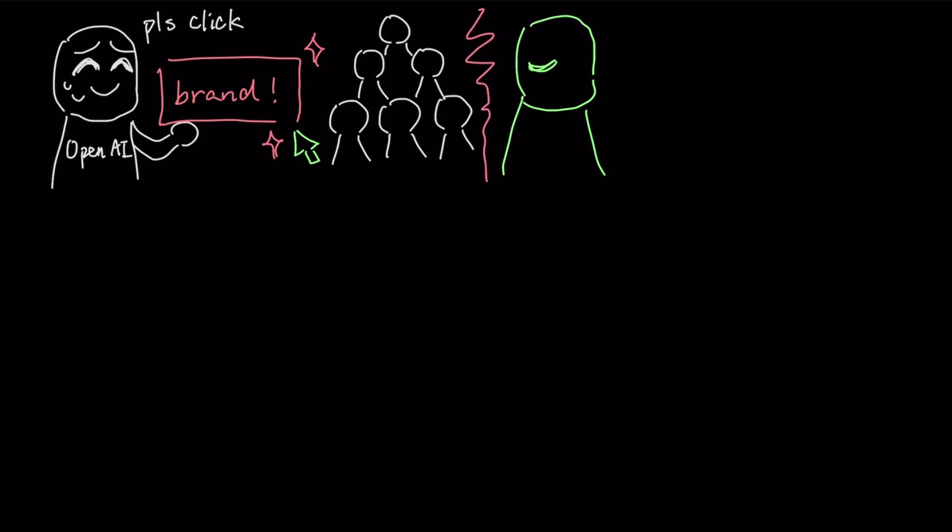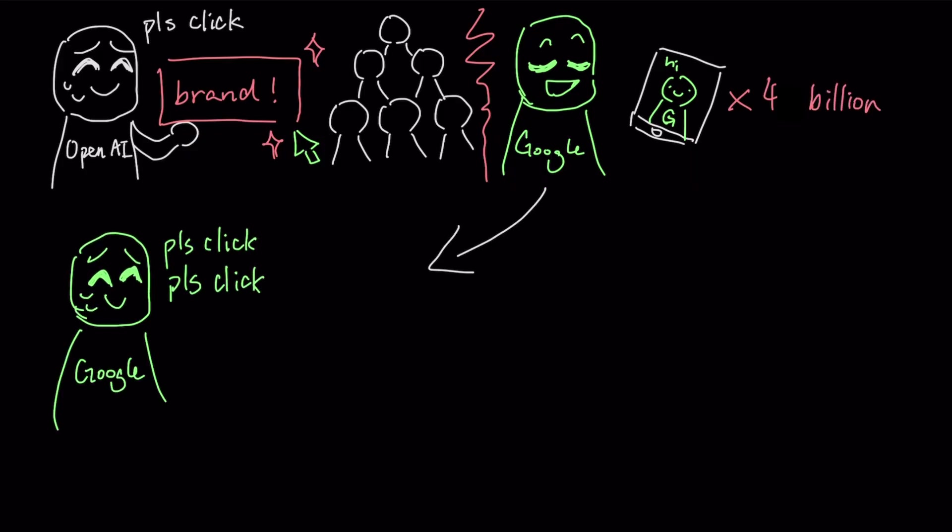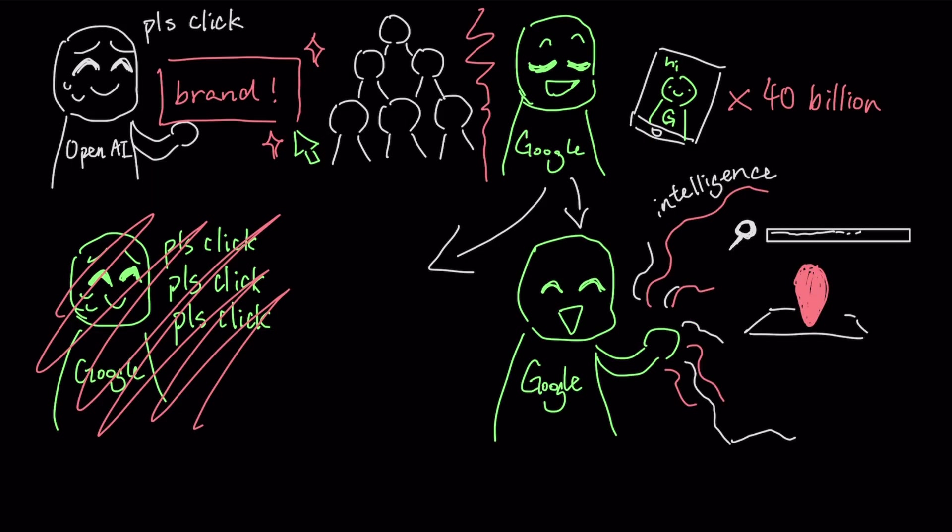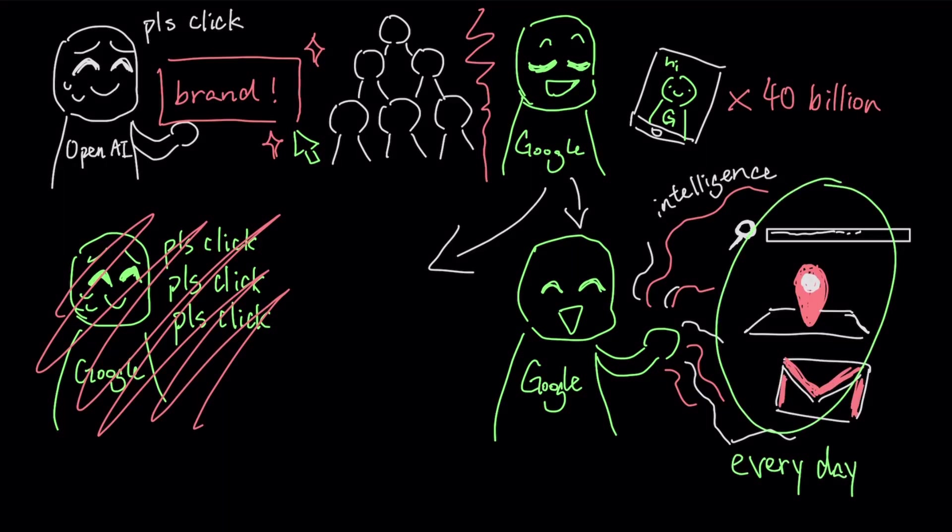Google, on the other hand, does not have this friction because they already control the operating system on nearly 4 billion Android devices around the world. This means they do not have to convince you to download a new tool because they can simply integrate their intelligence directly into the search bar, the map, or the email client that you are already using every day.